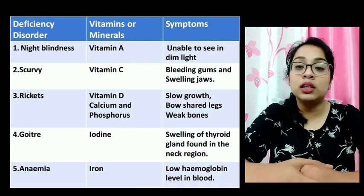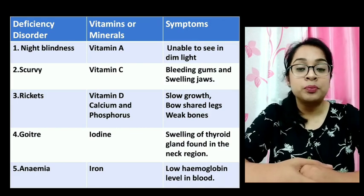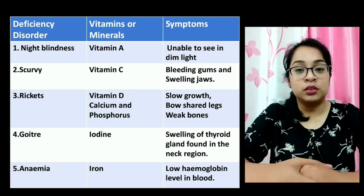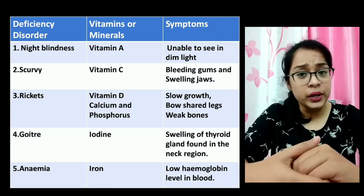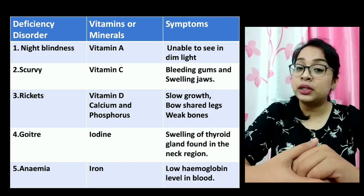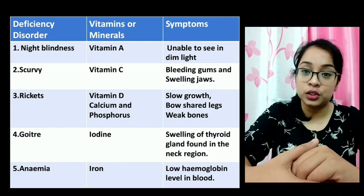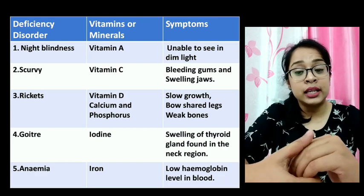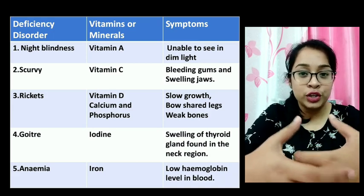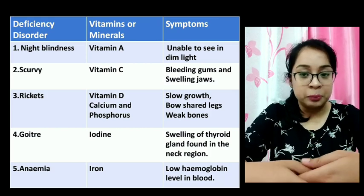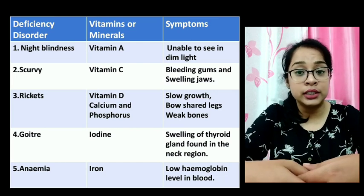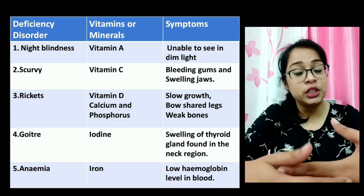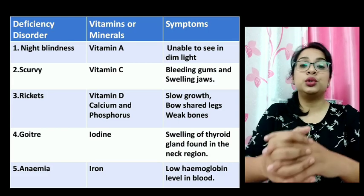The symptoms of scurvy are bleeding gums and swelling of the jaws. The next disease is rickets, which is caused due to the deficiency of Vitamin D and minerals calcium and phosphorus. The symptoms are that the growth of the child will become delayed, the legs will be bow-shaped, and the person will have very fragile bones and may get fractured very easily. The chief source of Vitamin D is sunlight.